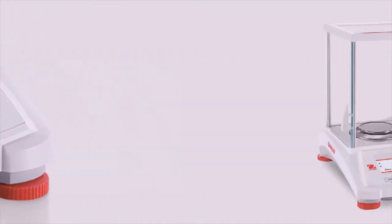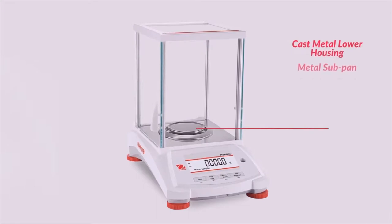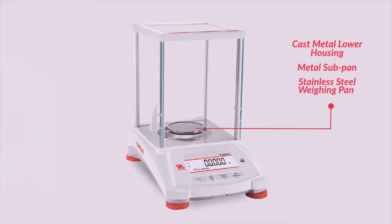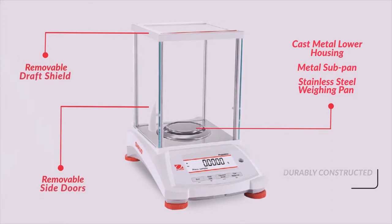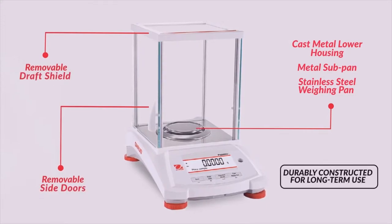Featuring a cast metal lower housing, metal subpan, stainless steel weighing pan, and removable draft shield or side doors, the Pioneer PX is durably constructed for long-term use and suitable for a variety of applications.